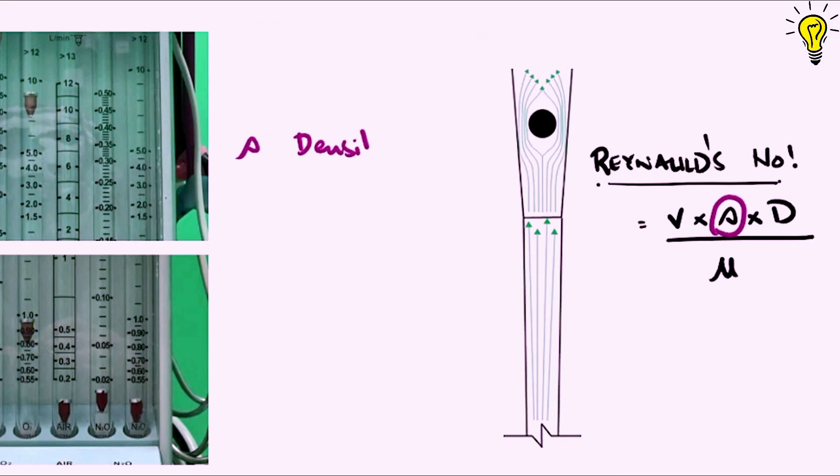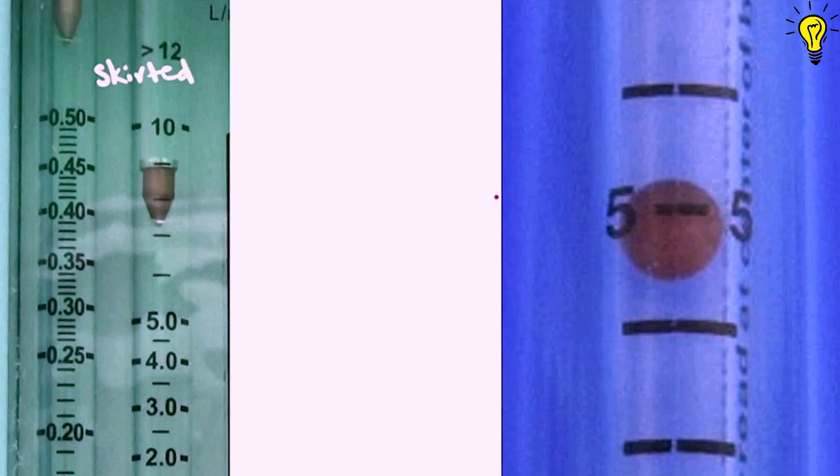Now one last thing regarding this equation, the density and viscosity. If you recall the equations of laminar and turbulent flow, laminar flow is related to viscosity while the turbulent flow is related to the density of the gas. Since both these variables are different for different gases, so the top tubes that you see in the flow meters, they are calibrated and specified for each gas differently. The float may be skirted as on the left or it may be ball bobbin as on the right.